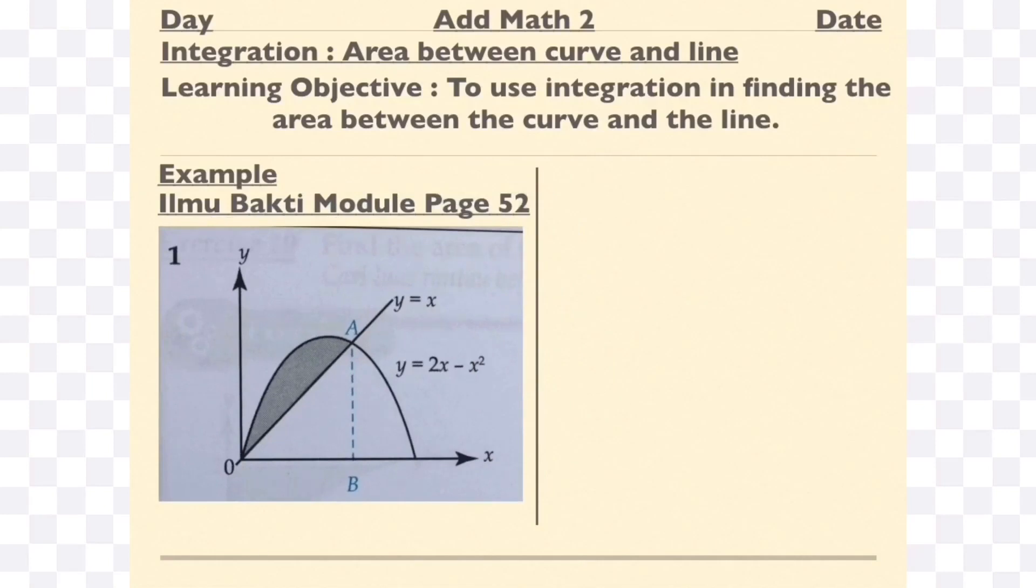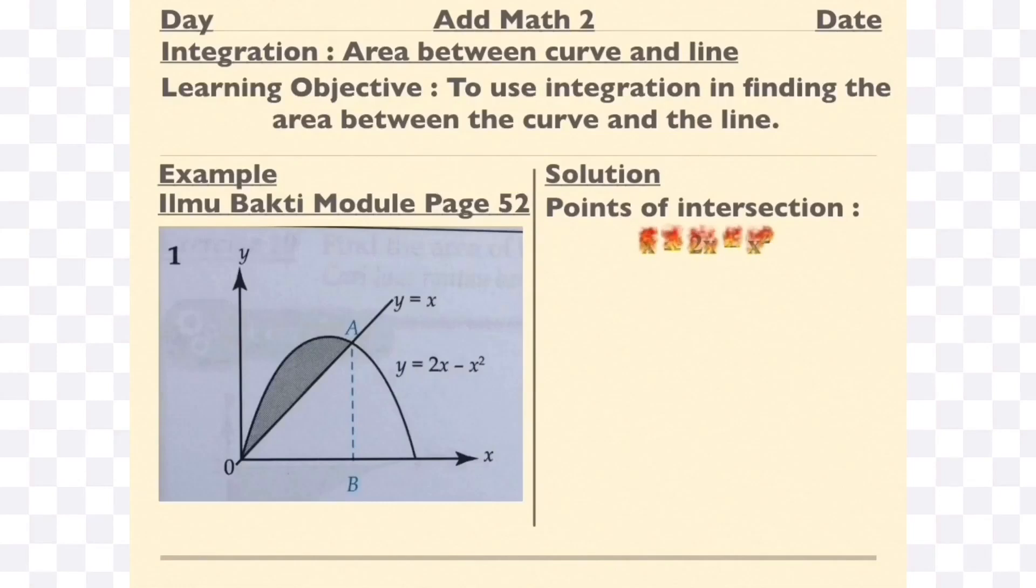If you look at page 52 on the Ilmu Bhakti module, you're going to find the area which is bounded between the curve and the line. First, we're going to use the concepts of simultaneous equations. You're going to equate y equals x with y equals 2x minus x squared.